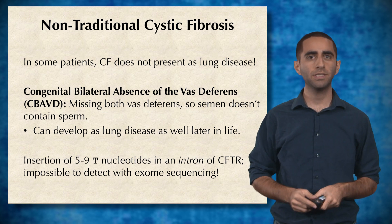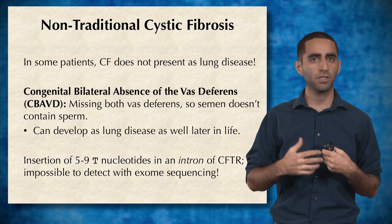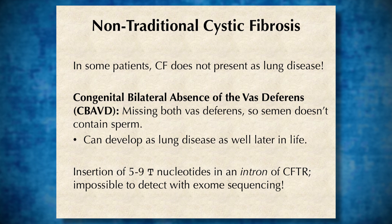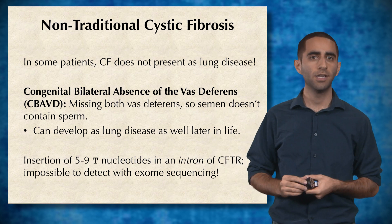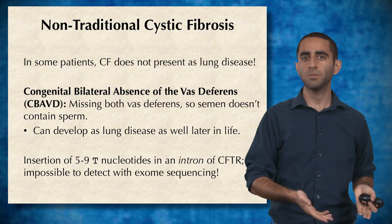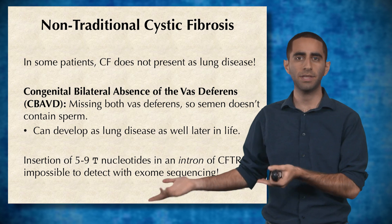In some patients, cystic fibrosis doesn't present as a lung disease. There's a condition called congenital bilateral absence of the vas deferens, in which the individual is missing both vas deferens, so semen doesn't contain sperm — this is actually a type of CFTR disease. These individuals may also later develop a lung disease, but it's not guaranteed. While classic cystic fibrosis involves a mutation in the protein-coding region of CFTR, this special type is caused by an insertion within an intron of CFTR. So even if we were looking for cystic fibrosis, we couldn't rule out whole genome sequencing, because this type would not be detectable with exome sequencing.